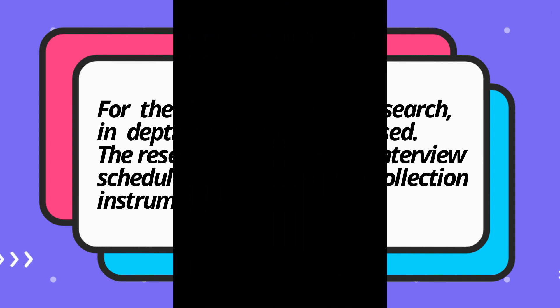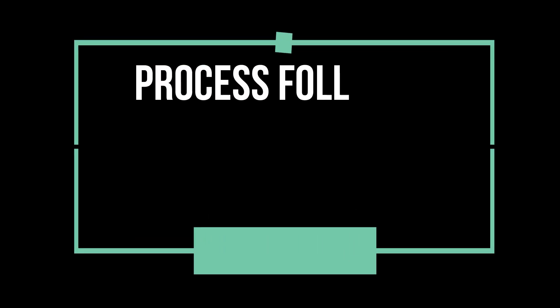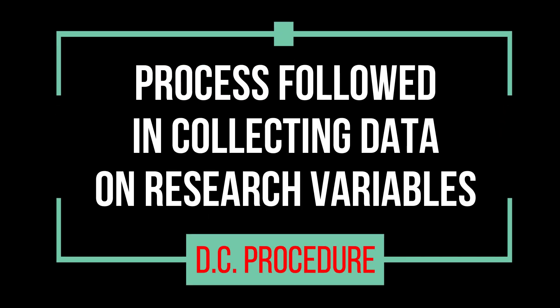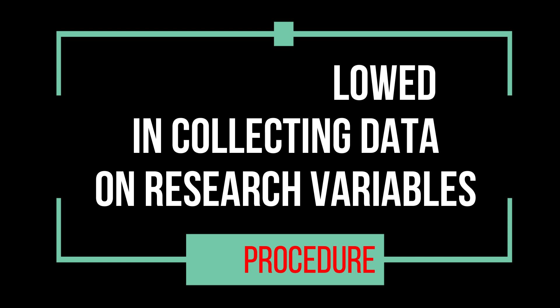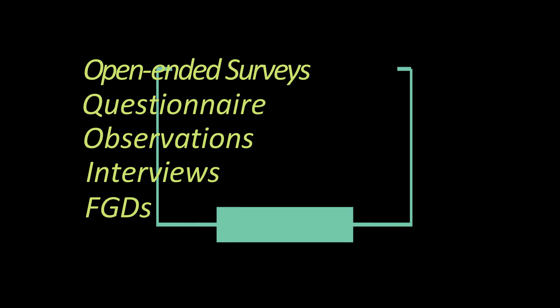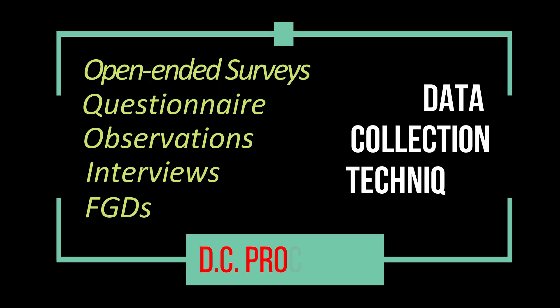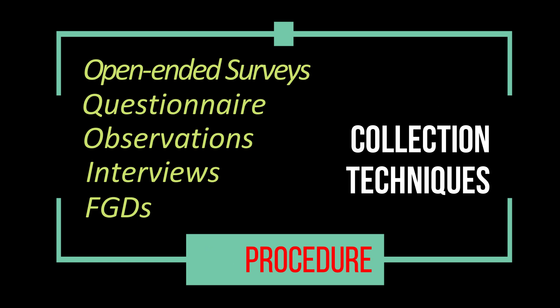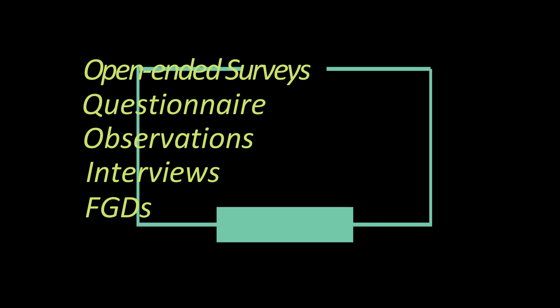The last part of Chapter 3 is data gathering procedure. Data collection is the process of gathering and measuring information on research variables in a systematic way that enables the researcher to answer the research questions, test hypotheses, and evaluate outcomes. Some of the most common qualitative data collection techniques include open-ended surveys and questionnaires, interviews, focus groups, observation, and many more.